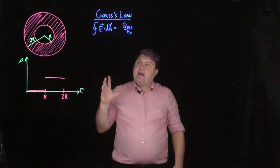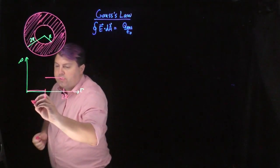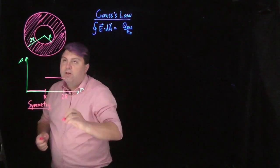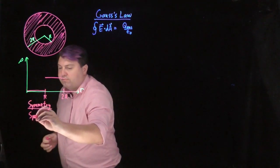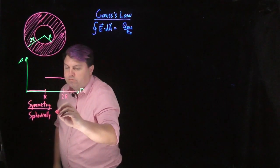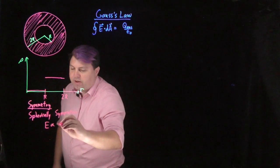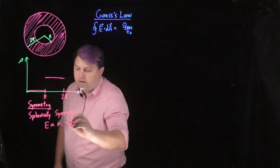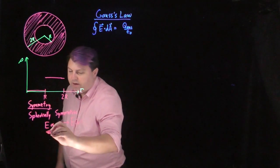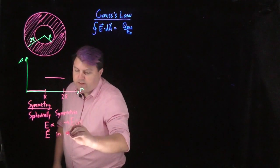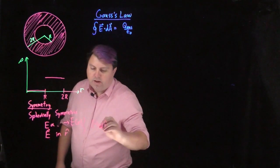We want to find the electric field at all space. First we want to use some of our symmetry arguments. Looking at our symmetry, we can tell that this is spherically symmetric. This means that E is a function of r, and we know that our E vector is in the r-hat direction. So our electric field is E(r) in the r-hat direction.